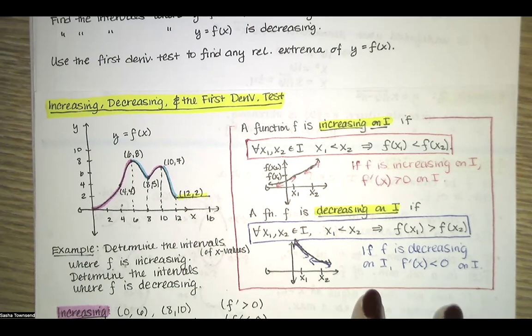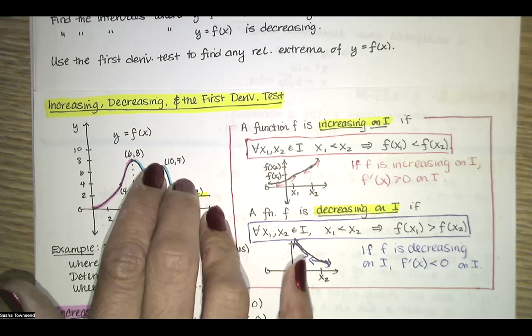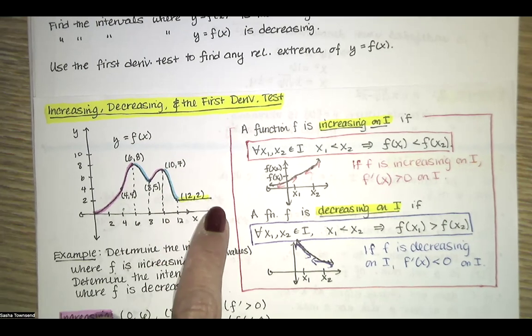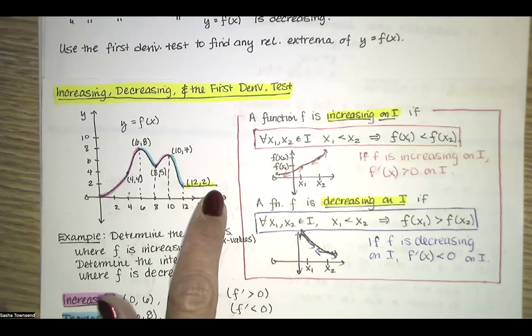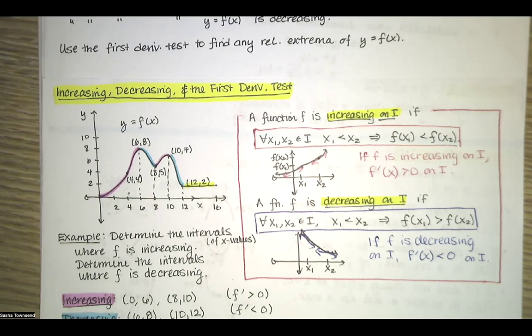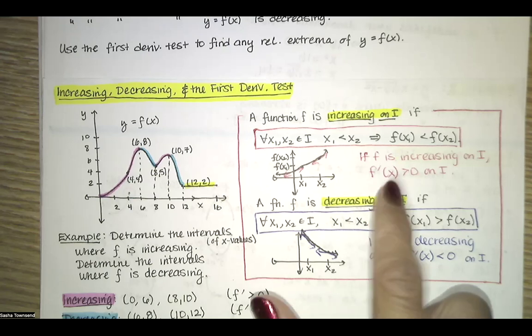To find intervals where the function is increasing or decreasing, we could look at the graph and see where y values go up or down. But if we only have the equation, we find intervals where f prime is positive or negative. The dividing line between negative and positive is zero, so we first find the critical values — x values that cause f prime to be zero or undefined — which defines the intervals we test for sign.